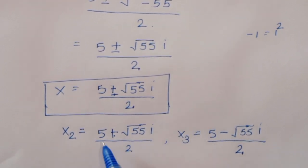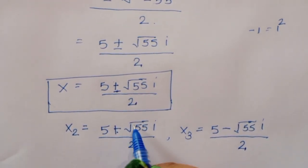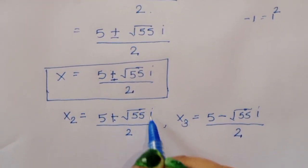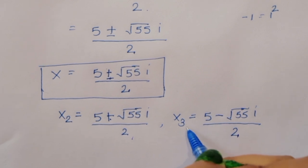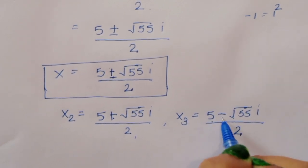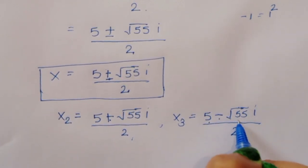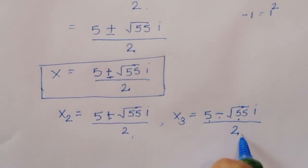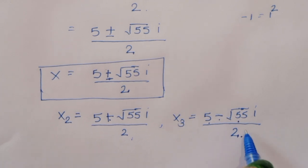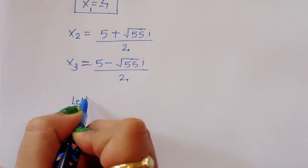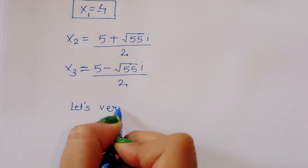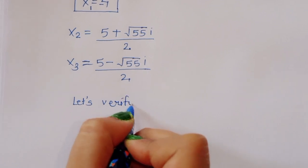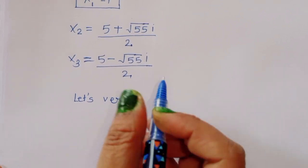So we have three solutions: the first is x₁ equals minus 4, the second is x₂ equals (5 plus square root of 55 · i) divided by 2, and the third is x₃ equals (5 minus square root of 55 · i) divided by 2.